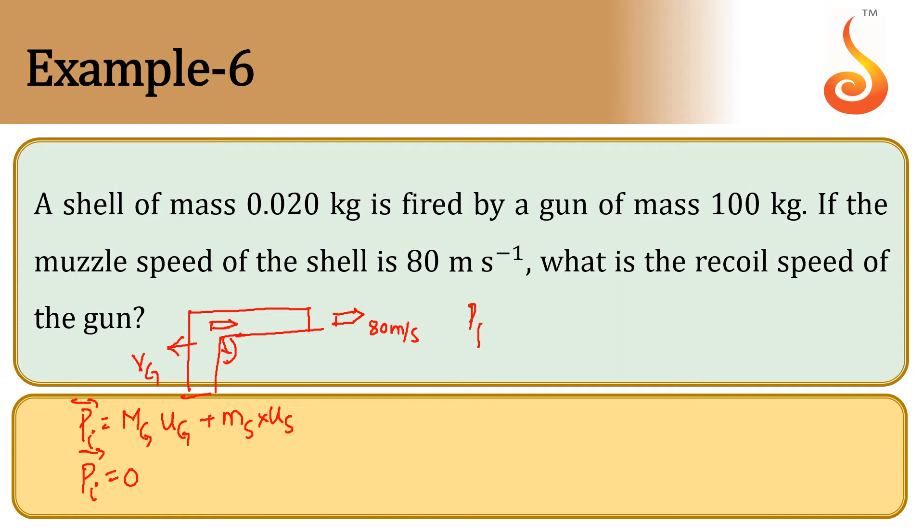Final momentum of the system will be mass of the gun times velocity of the gun plus mass of the shell times velocity of the shell.